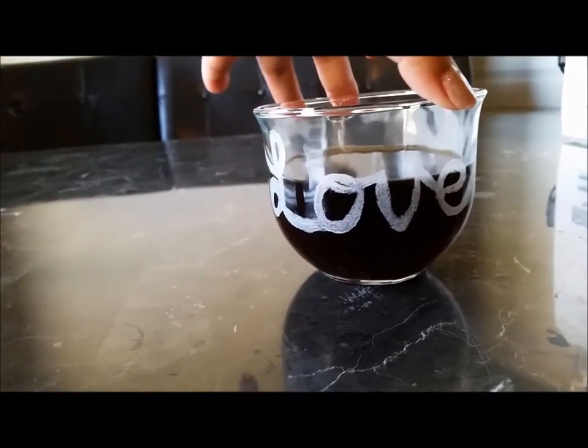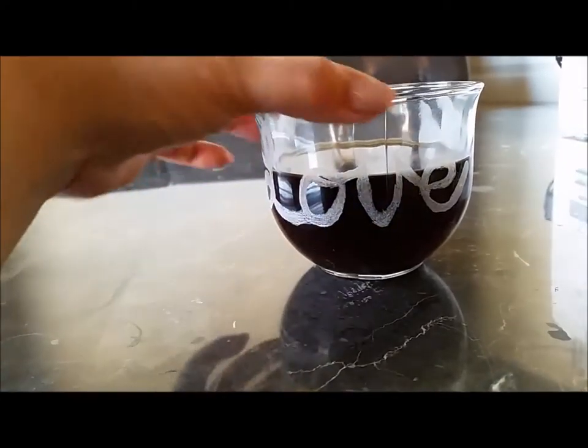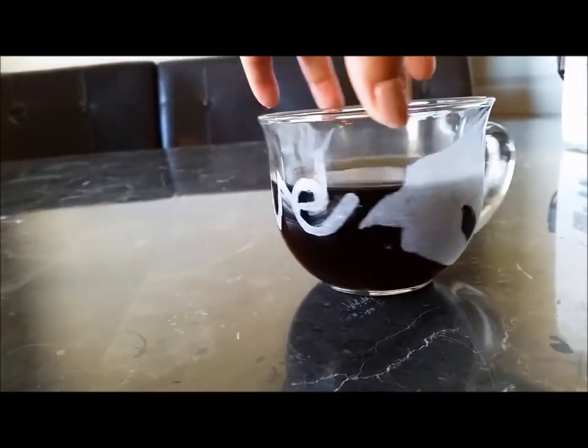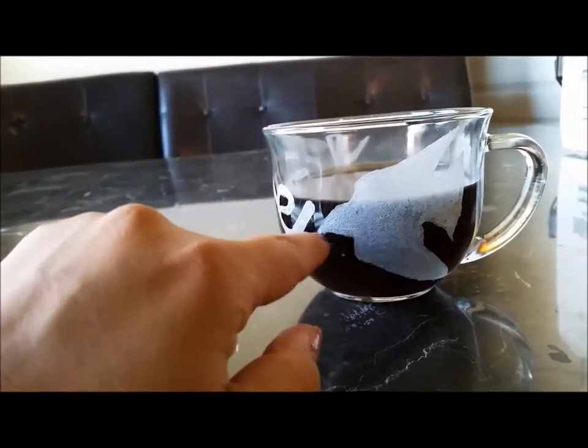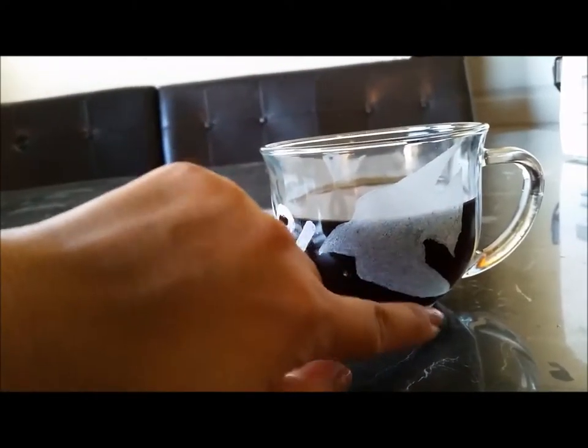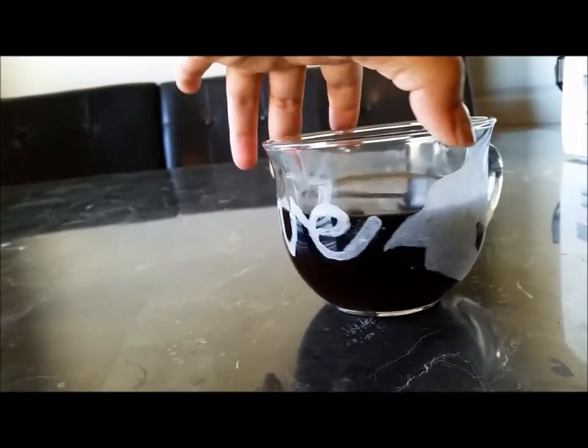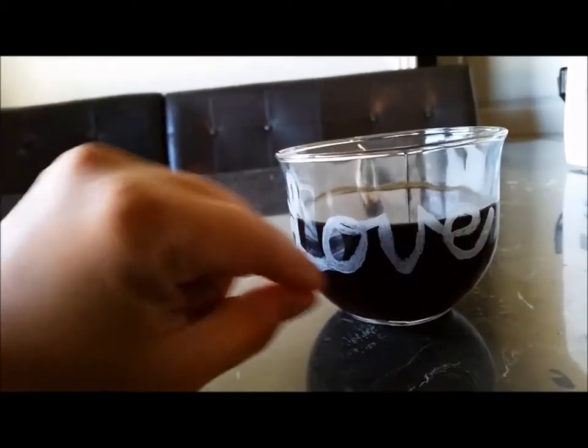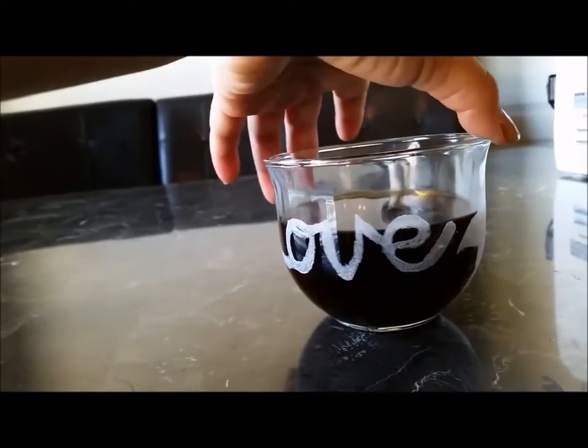I got these mugs at Dollar Tree for a dollar, and I etched in just a little picture. This one I actually got a sticker of a bird silhouette and I traced the sticker, and then once I peeled the sticker off, I just filled it in etching with a Dremel. I hand wrote the word love and then traced over it with the Dremel.